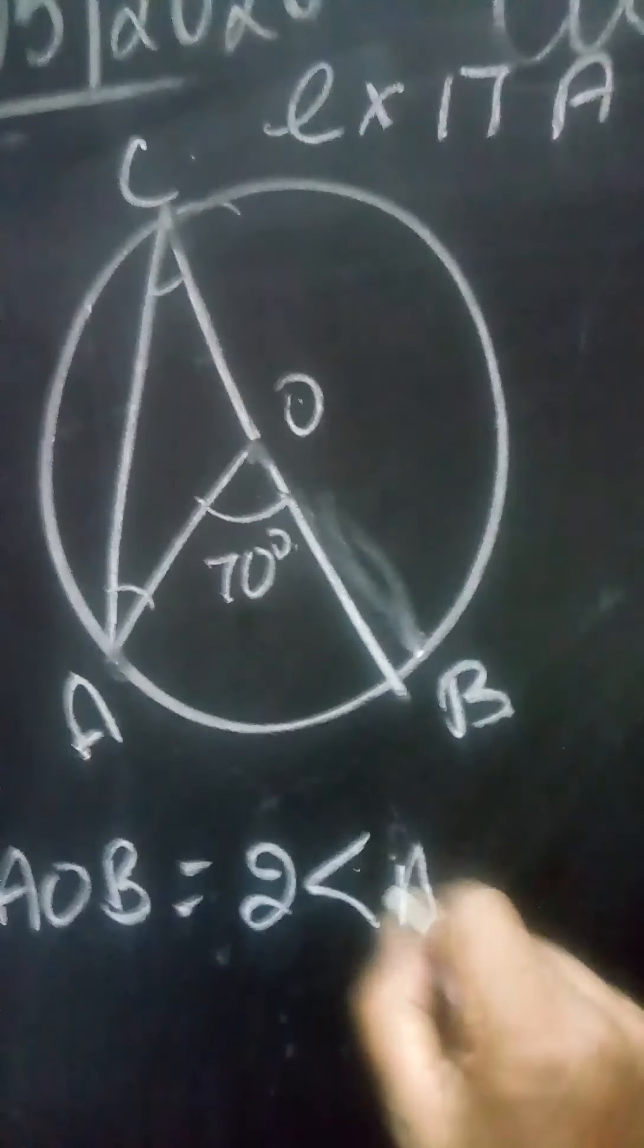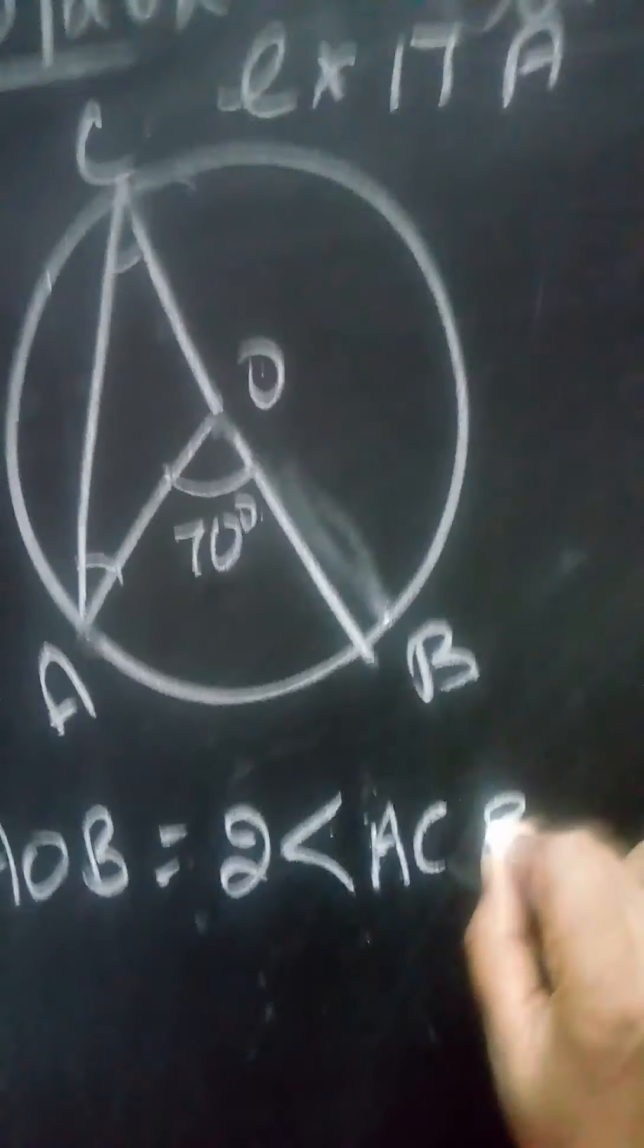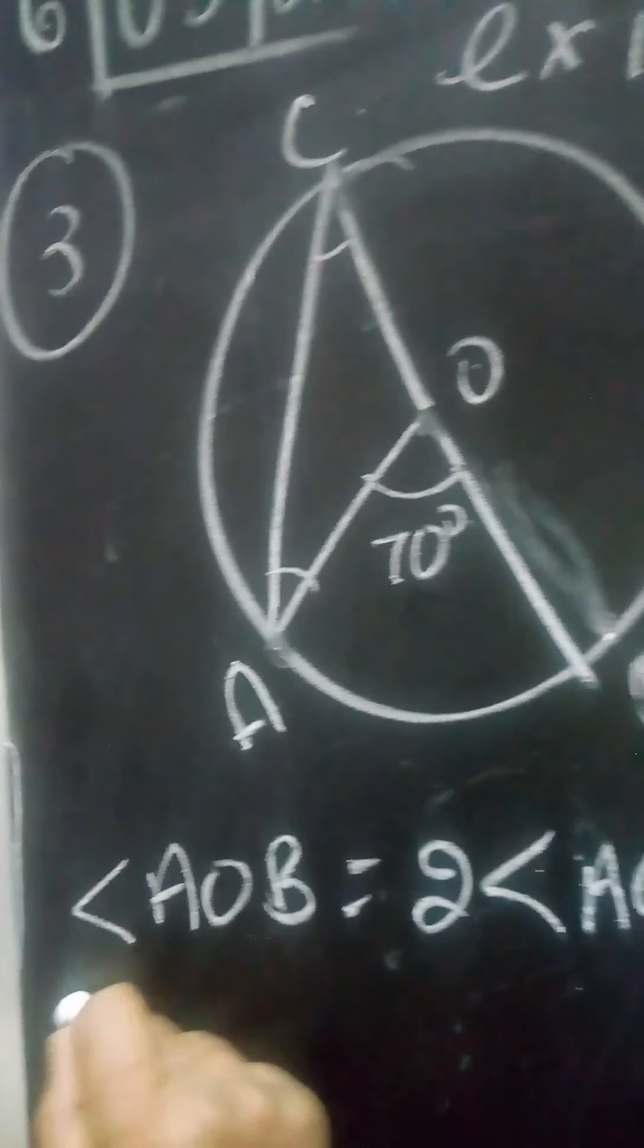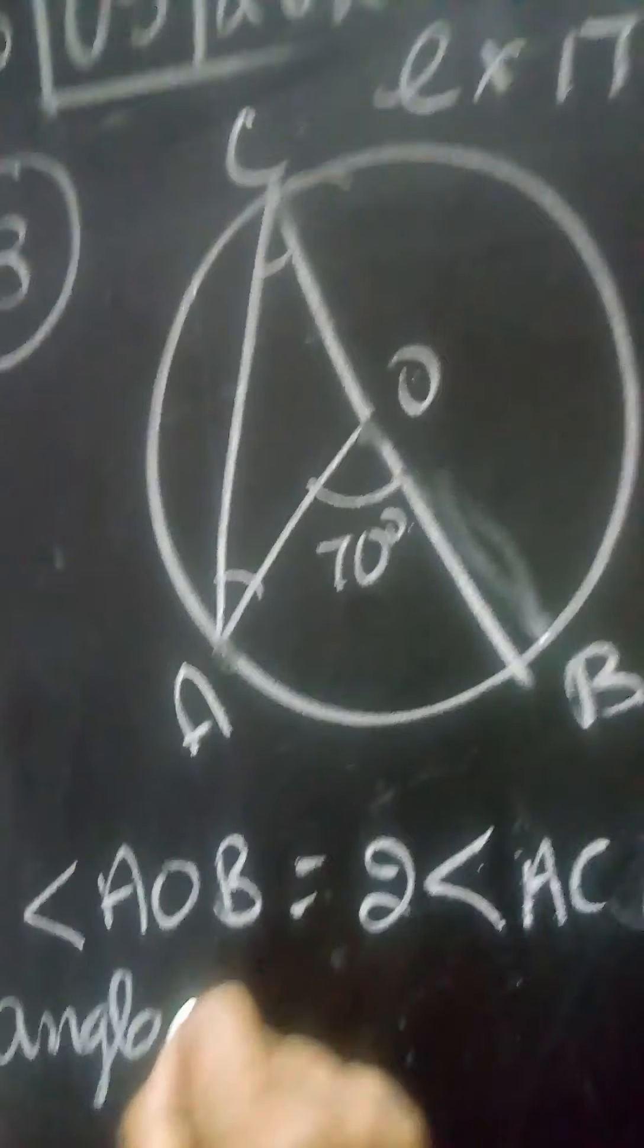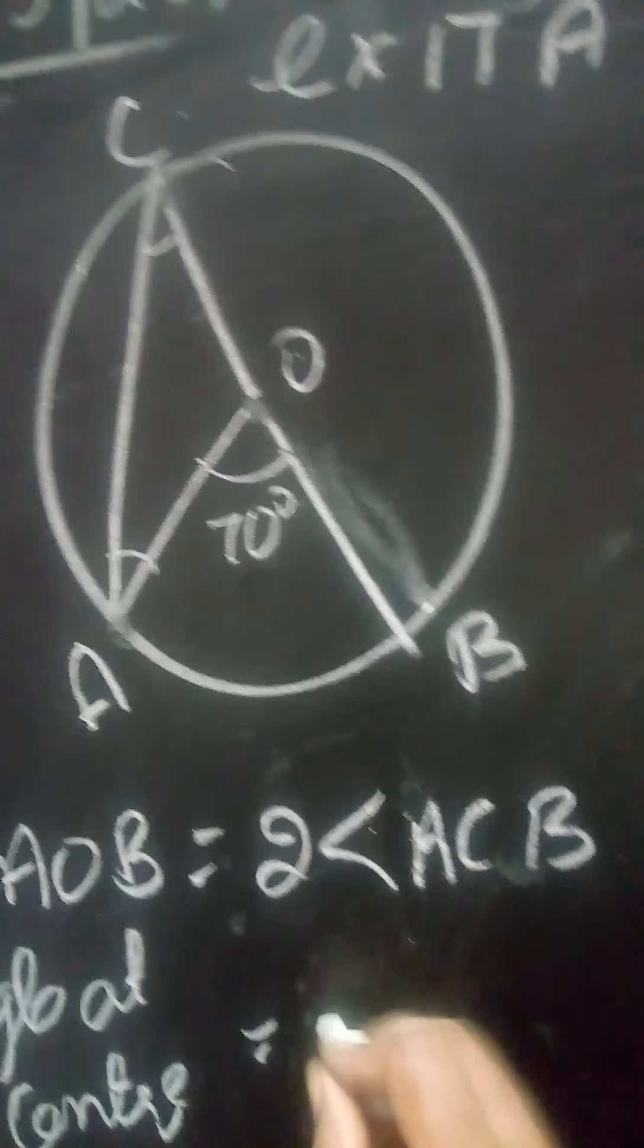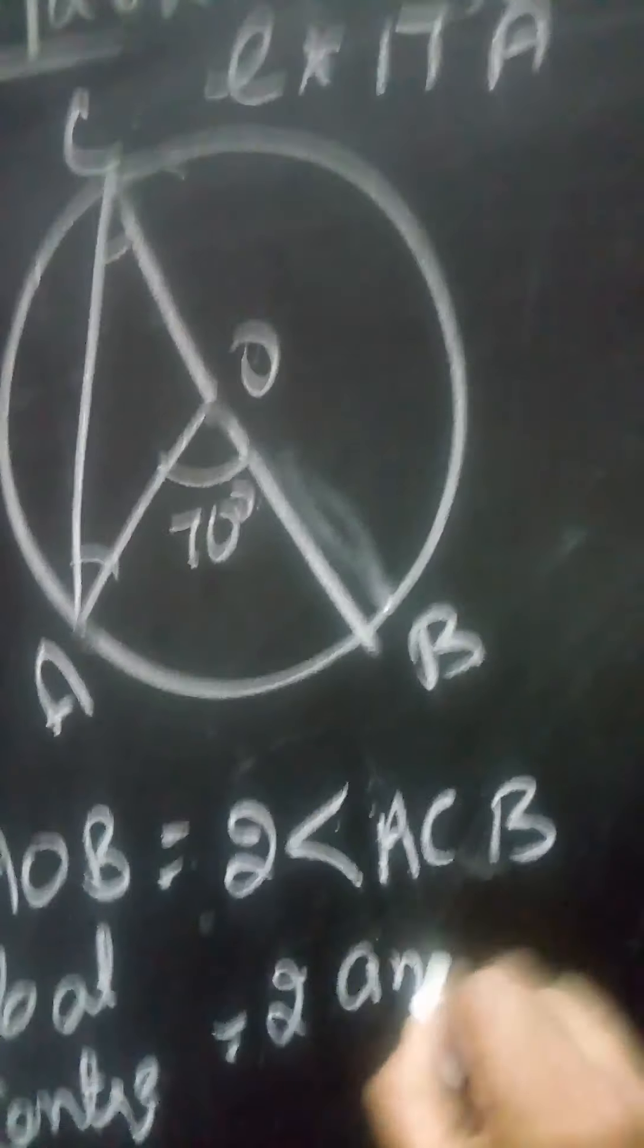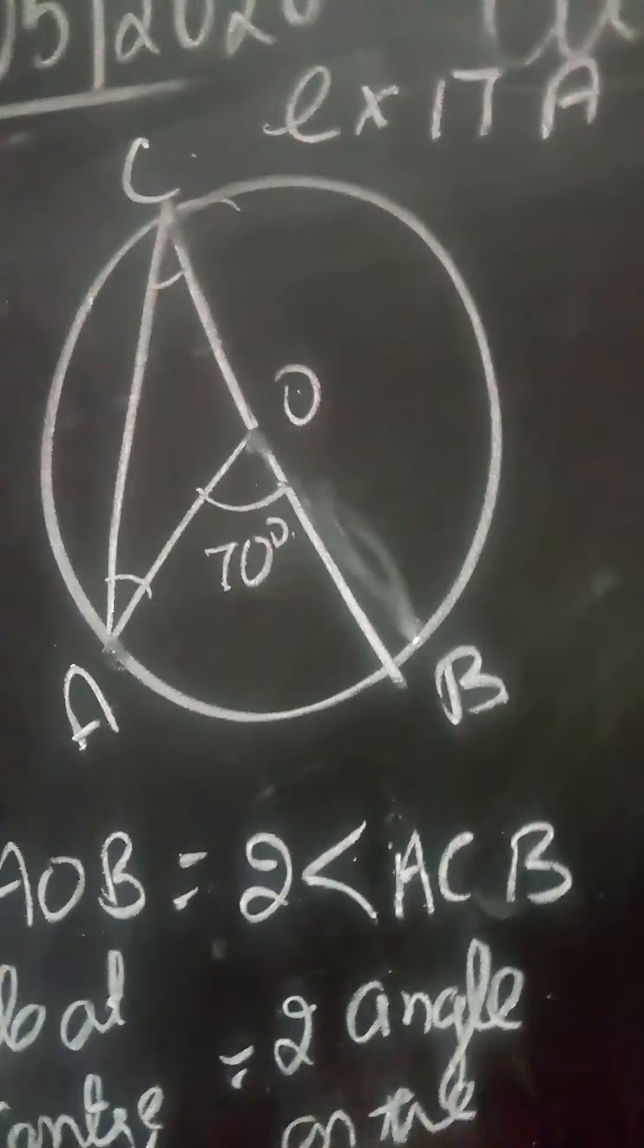...times angle ACO or ACB. This is the angle at the center, which is two times the angle on the circumference.